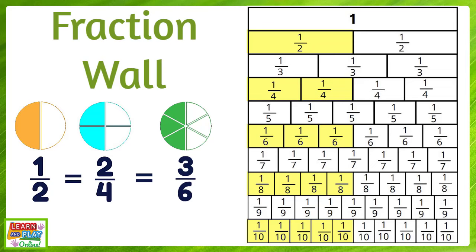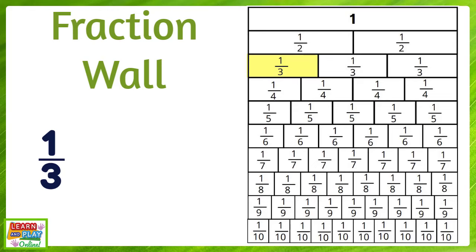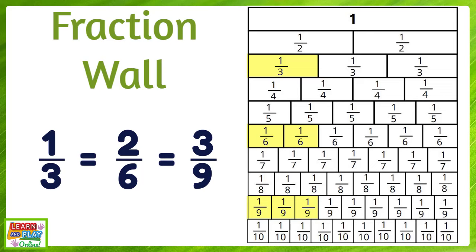Now that you know what equivalent fractions are, using the fraction wall to help you, can you identify all the equivalent fractions for one third? Remember, equivalent fractions represent the same value. The equivalent fractions to one third, as you can see on the fraction wall, are two sixths and three ninths.